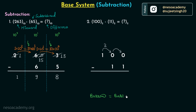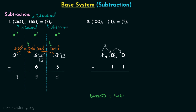We know the borrow value is equal to the base of the number system. So 1 gave 2 to 0, and 2 plus 0 equals 2. Now we have 2 in place of 0 and 0 in place of 1. This 2 will give the borrow to 0, and the borrow will be equal to 2, so 2 plus 0 gives us 2 here and 1 remains. Now we can perform the subtraction: 2 minus 1 equals 1, 1 minus 1 equals 0, and 0 minus 0 equals 0.